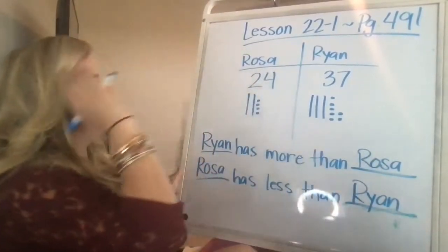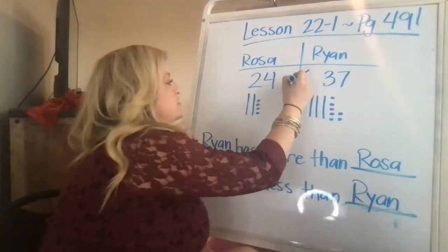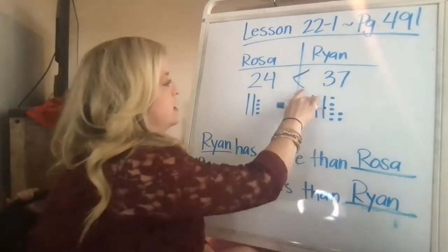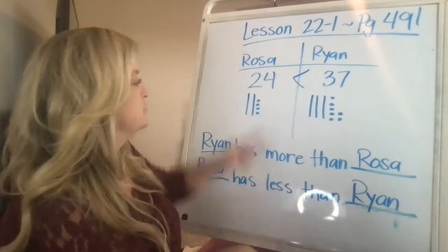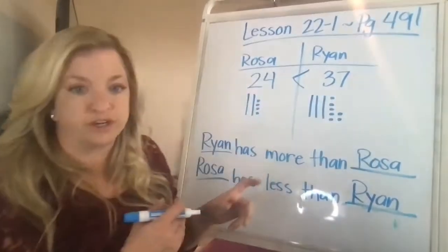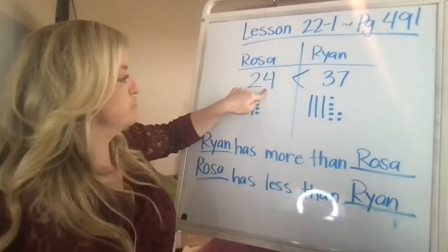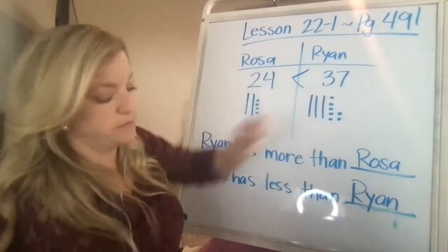Now, if I had the alligator symbol, I would put it towards the 37 because the alligator always eats the biggest number. So 24 is less than 37 is how you would read that. When you have less than the smaller number goes first, than the bigger number.